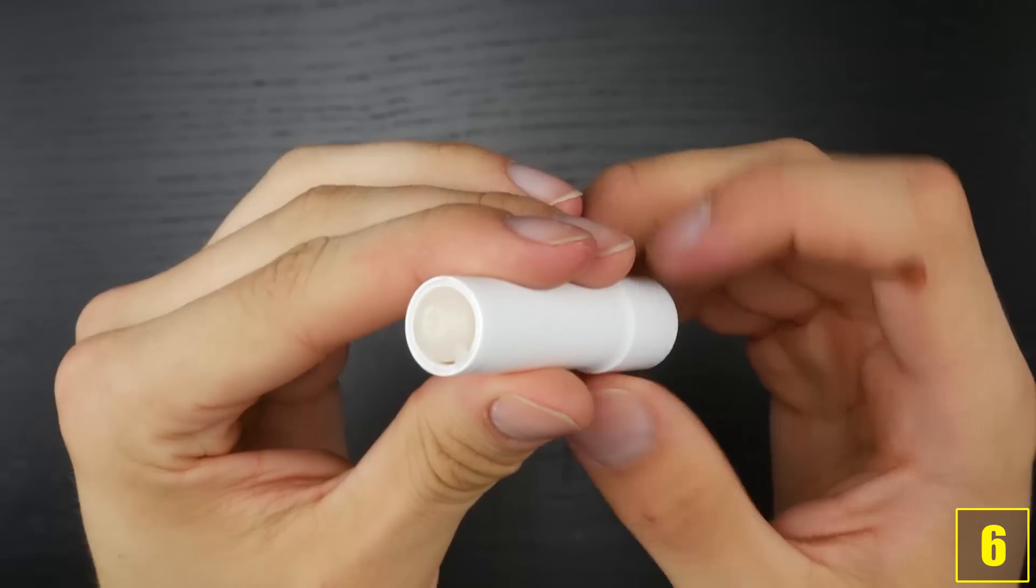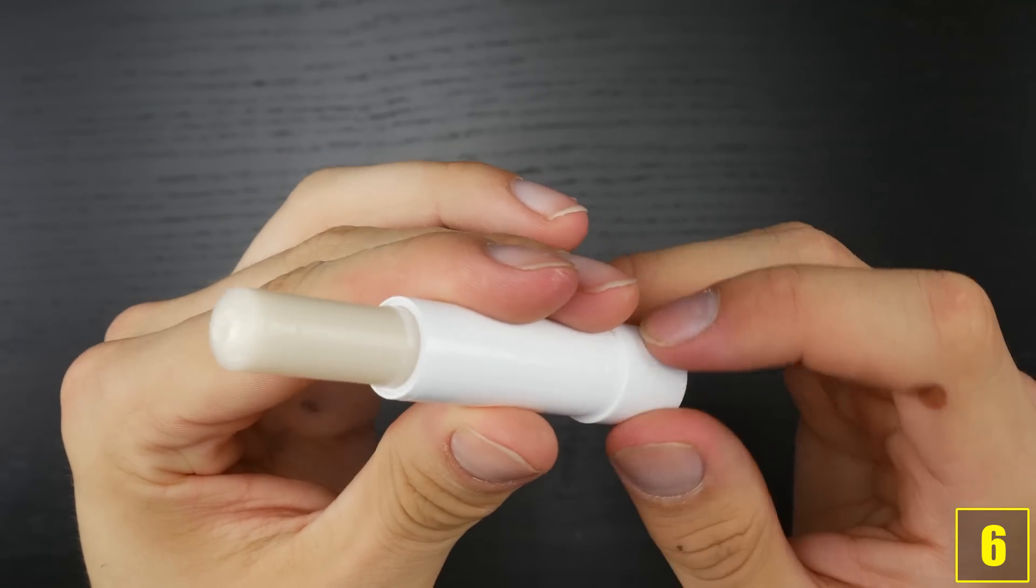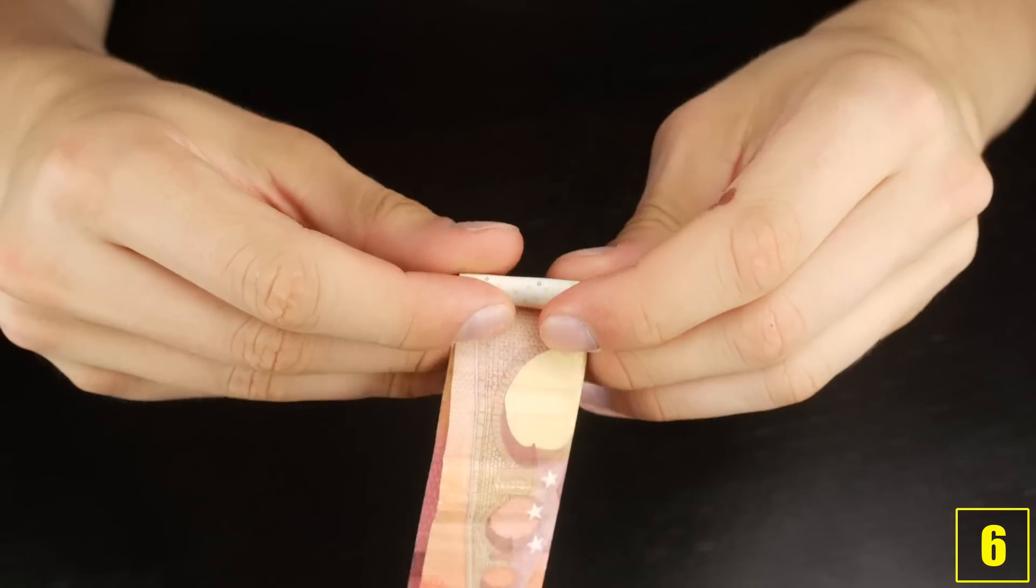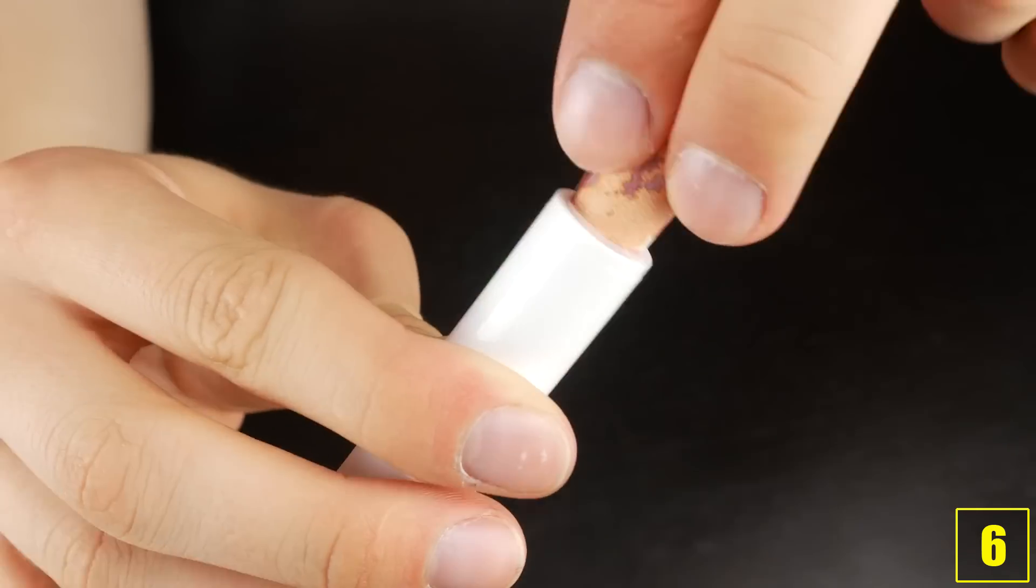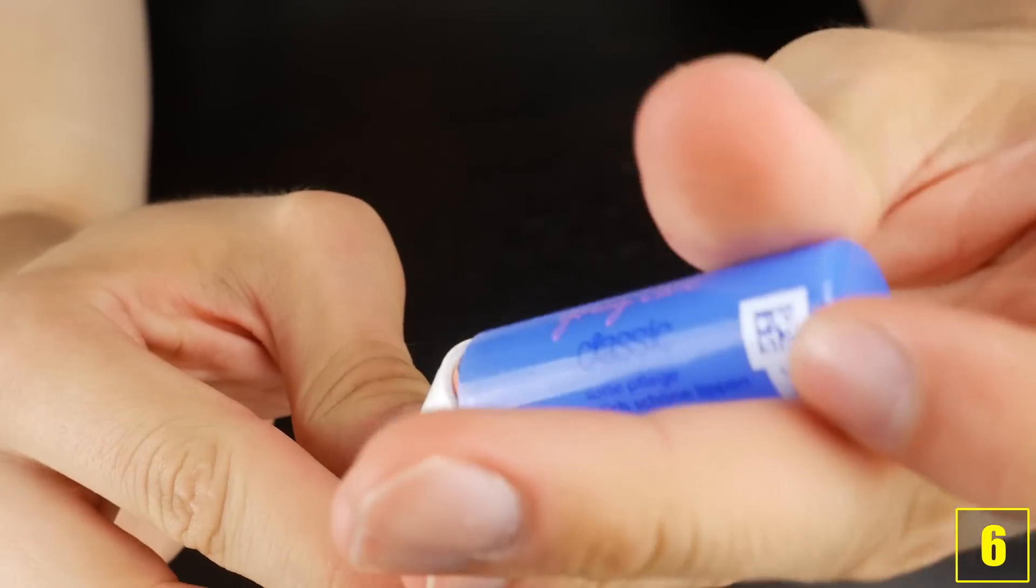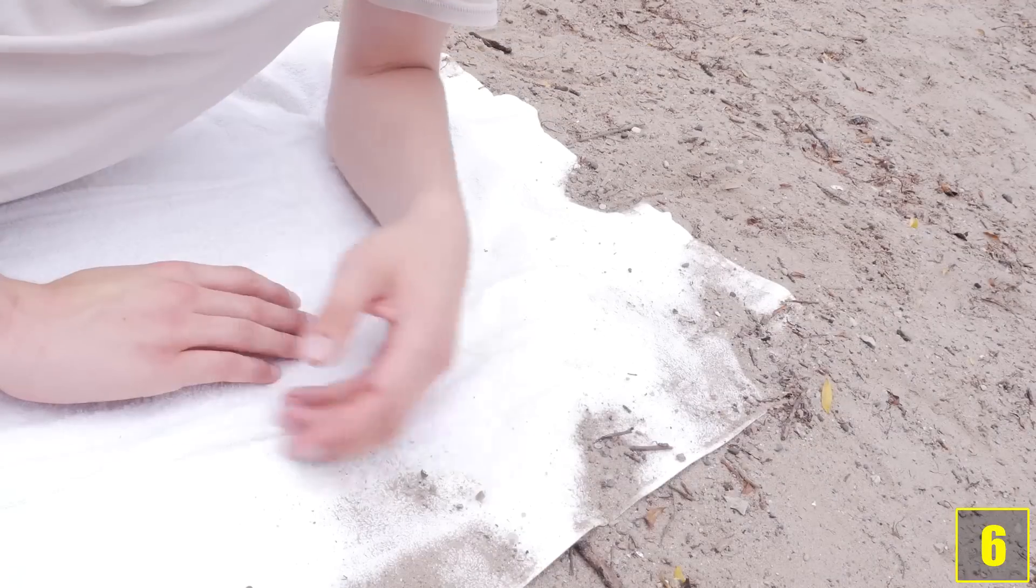And number 6. Just like number 7, this life hack involves hiding things. Take a chapstick, remove the inside and clean it thoroughly. Now just roll up a bill, put the lid on and there you go. Nobody will ever expect that your money is in a chapstick.